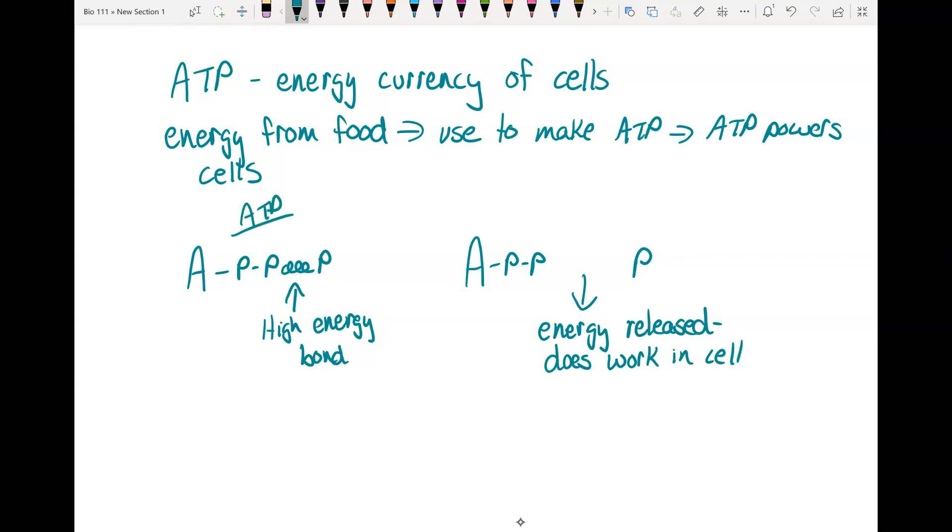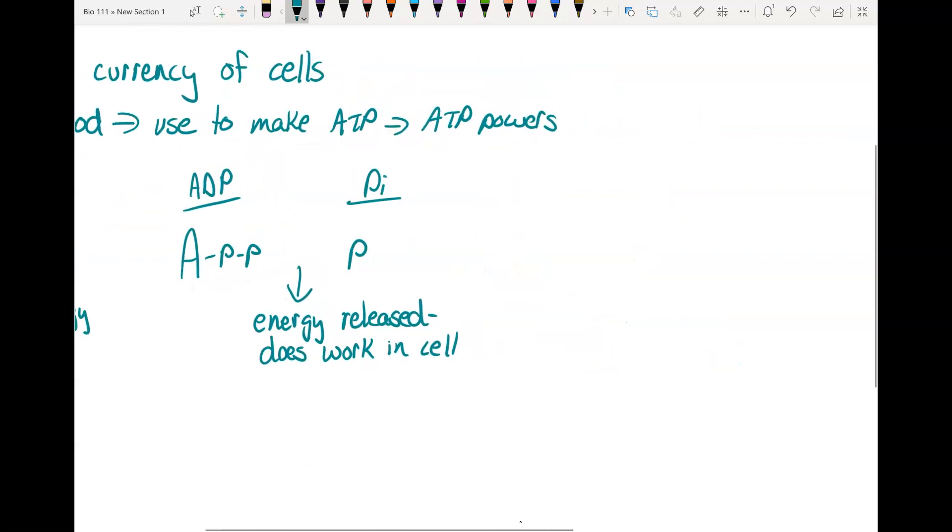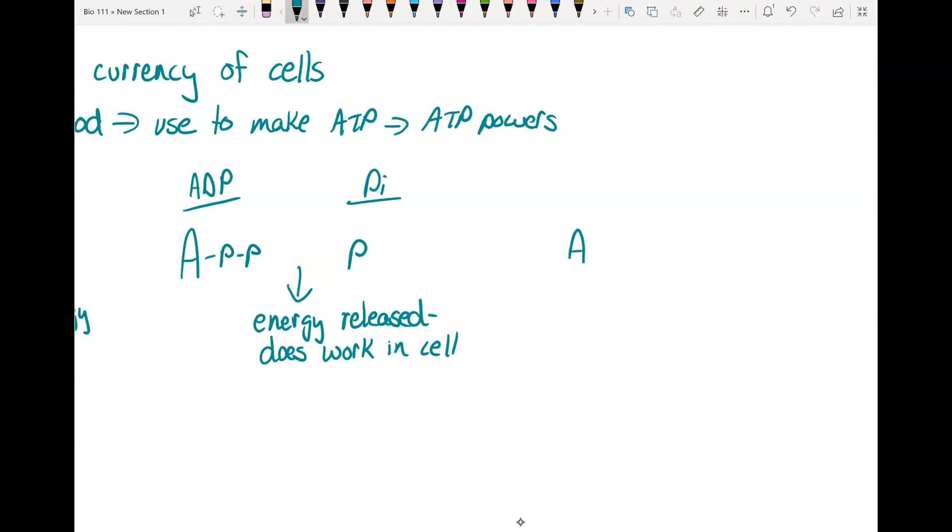After you break it off, you're left with adenosine and two phosphates. This is ADP, the D for di, and then you have just a phosphate by itself. The next thing is to reattach it. Your body puts that phosphate back and creates a new high energy bond.